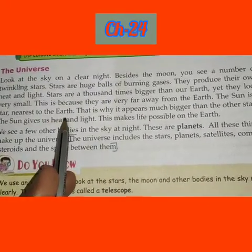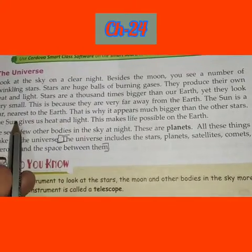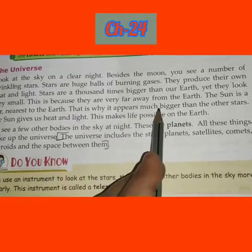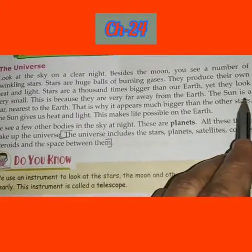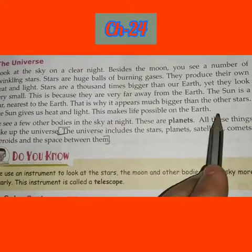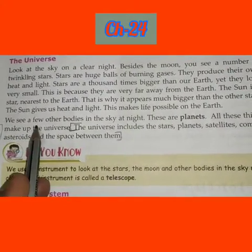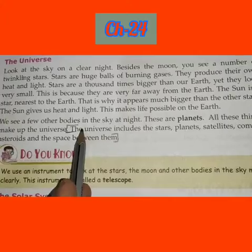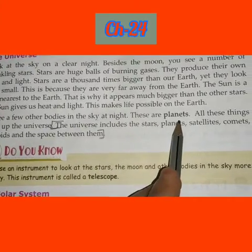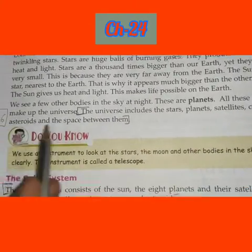The sun is the star nearest to the Earth. The sun is also a big star, that's why it appears much bigger than other stars. The sun gives us heat and light, which makes life possible on the Earth. We also see a few other bodies in the sky at night — these are planets.